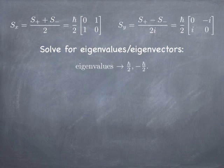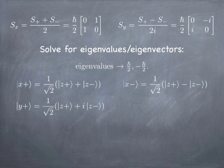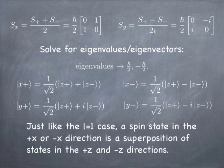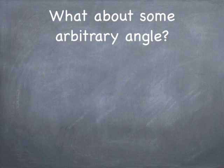An interesting part is the eigenvectors: x-plus, x-minus, y-plus, and y-minus. Notice that each of these can be represented as superpositions of our z-component basis — just like orbital angular momentum. Any angular momentum eigenstate of value L can be represented as a superposition of eigenstates of well-defined z-component of angular momentum. And we can actually show a spin angular momentum eigenstate that points in any direction in space.